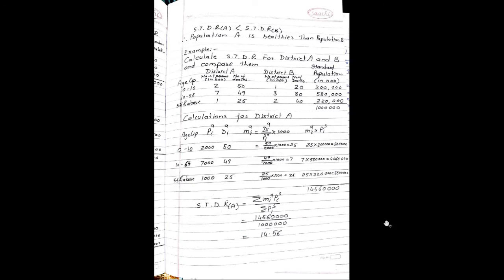See the next example: calculate STDR for District A and B and compare them. District A values are given — number of persons in 1000 and number of days. For District A, age group 0 to 10: population is 2000, total deaths are 50. Mortality rate is equal to 50 upon 2000 into 1000, which is equal to 25.